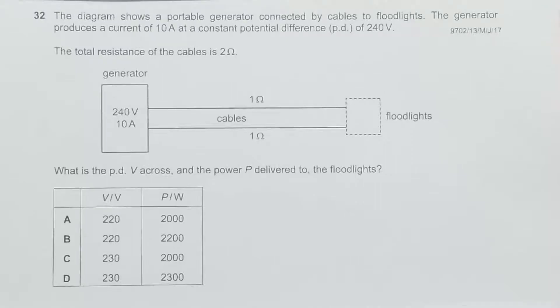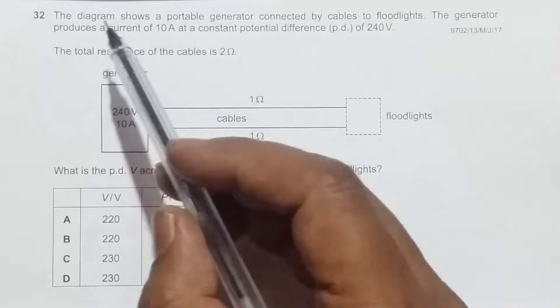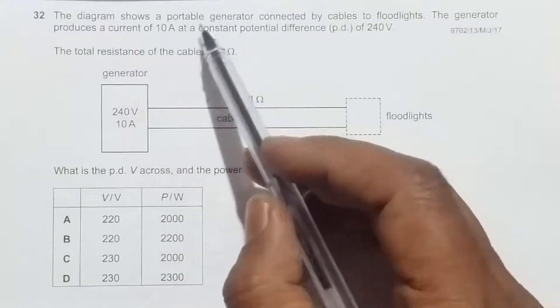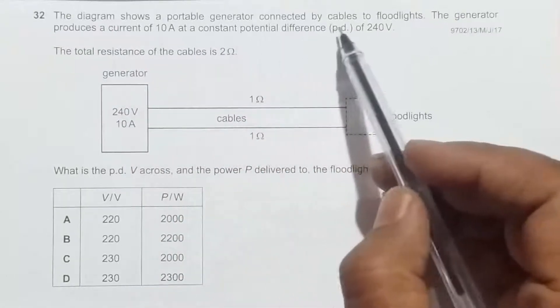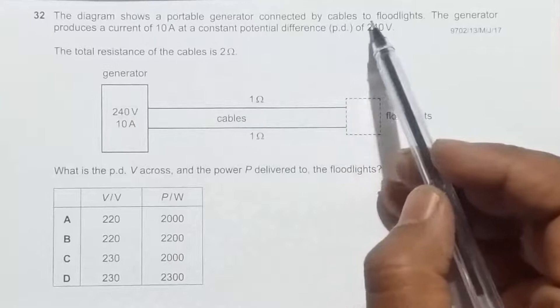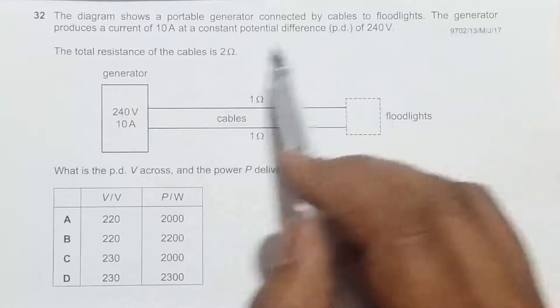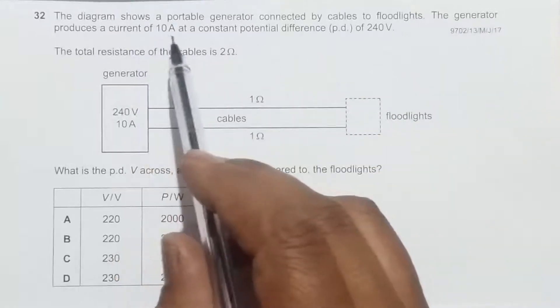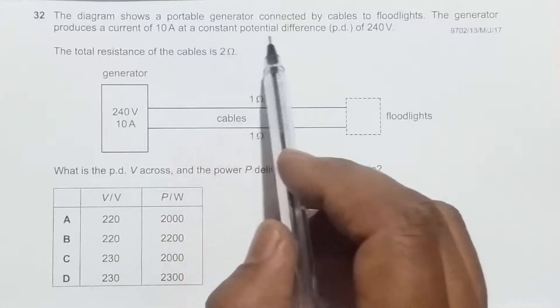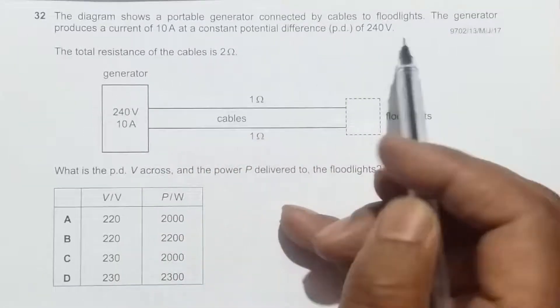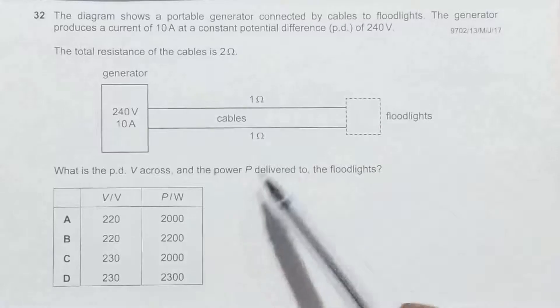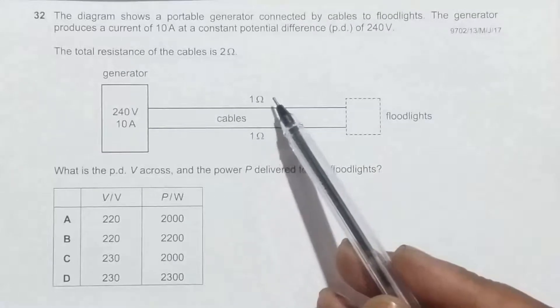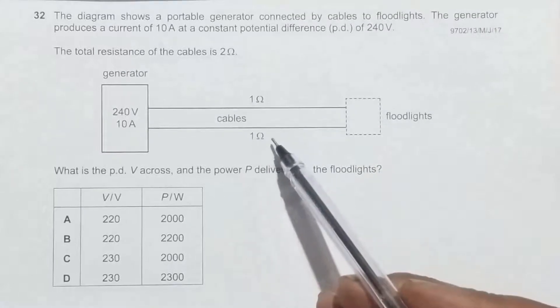This is question 32 from the 2017 May/June Paper 13. The question describes a portable generator connected by cables to floodlights. The generator produces a current of 10 amperes at a constant potential difference of 240 volts, and the resistance of the cables is 1 ohm here and 1 ohm here, totaling 2 ohms.